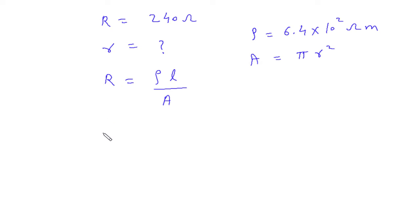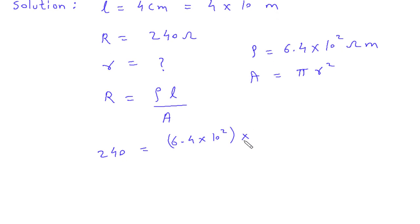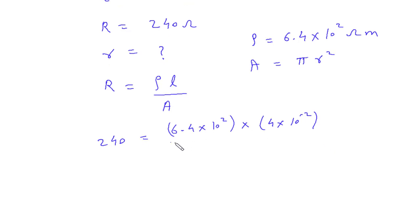So, R equals 240, rho equals 6.4 times 10 to the 2, L is 4 times 10 to the minus 2 meter, upon area.